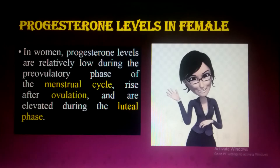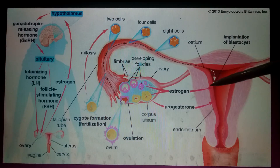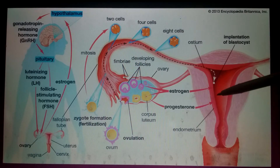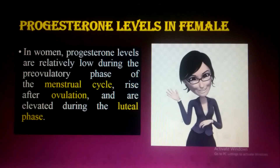In women, progesterone levels are relatively low during the pre-ovulatory phase of the menstrual cycle. They rise after ovulation, because the ruptured follicle converts into the corpus luteum whose function is to produce progesterone. Levels are elevated during the luteal phase — the phase in which the endometrium, the inner lining of the uterus, becomes thick to prepare for implantation of the embryo and to maintain pregnancy.